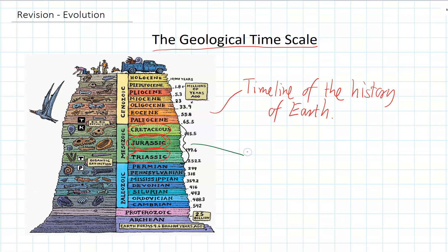That's obviously where Jurassic Park came from. But remember, dinosaurs didn't die out — they're still living as birds. Most of the dinosaurs went extinct at the end of the Cretaceous period, but the birds survive to this day.